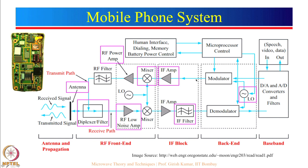There is a microprocessor controller which handles the human interface, dialing, memory, and battery power control. The data you want to send can be in the form of video or speech. These analog signals are converted to digital signals, and through the local oscillator some up-conversion is done. Current mobile phones are much more complicated — they also have a GPS receiver, accelerometer, and many more things.